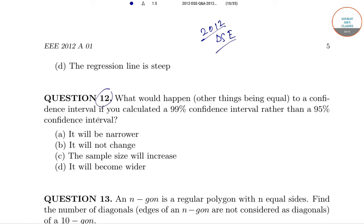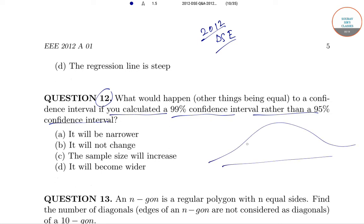What would happen to a confidence interval if you calculated a 99% confidence interval rather than a 95% confidence interval? By 99% confidence interval, we mean that it is something like this where the alpha is 1%, and for 95% it will be something like this, this region.